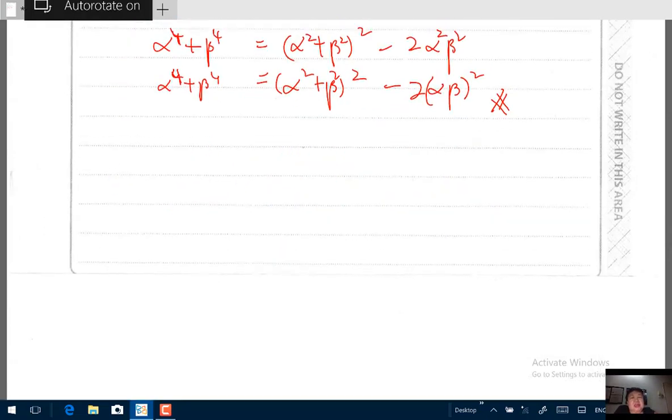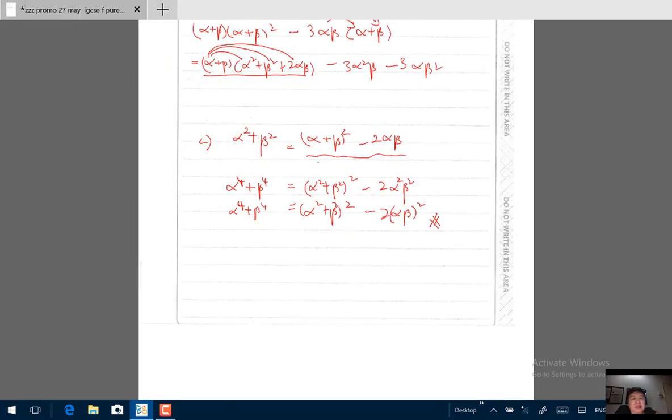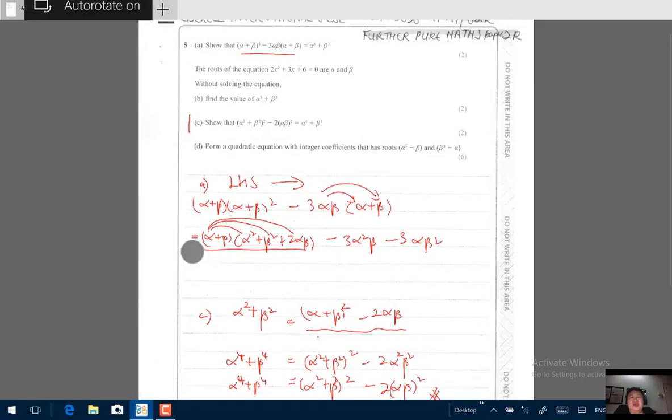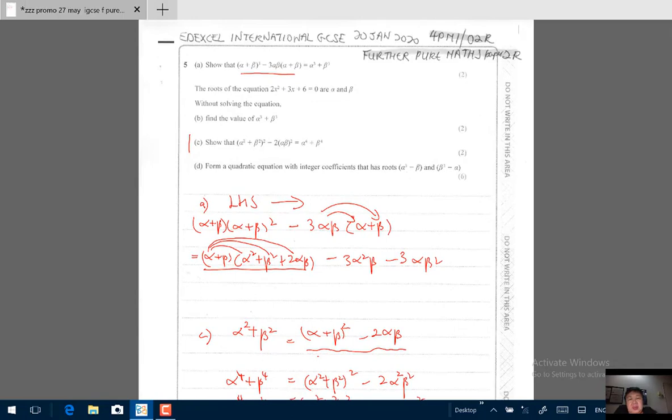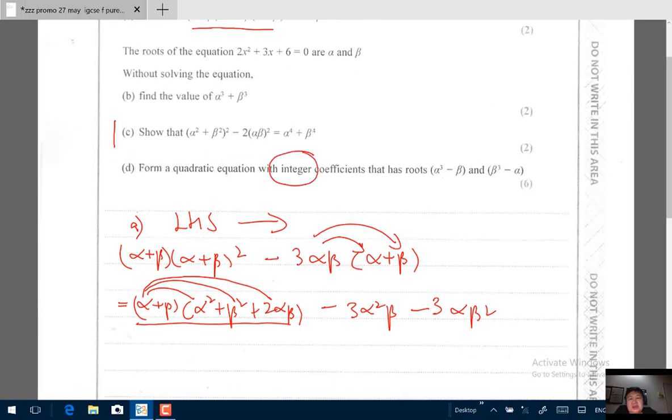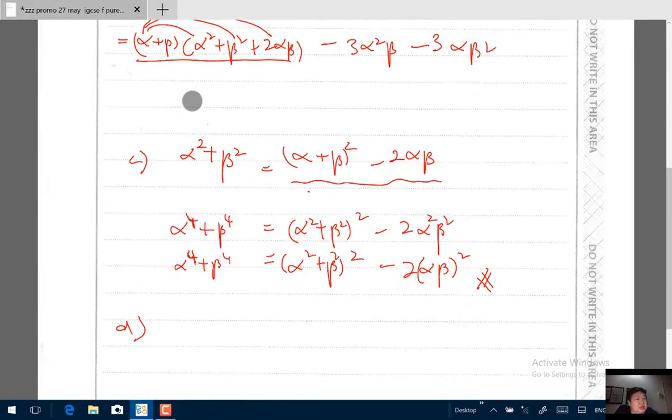Now part D needs a little bit more work. I would like you to practice part D yourself, but I will start for you. Part D says form a quadratic equation with integer coefficients that has roots α³ - β and β³ - α.